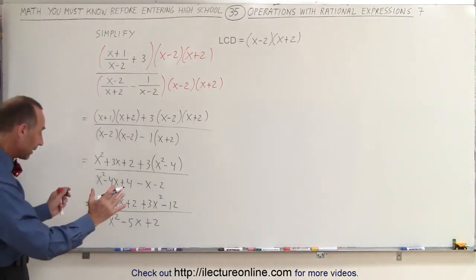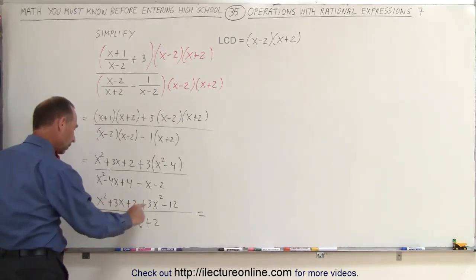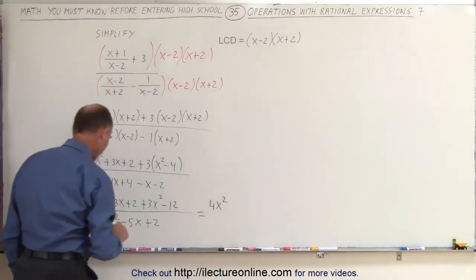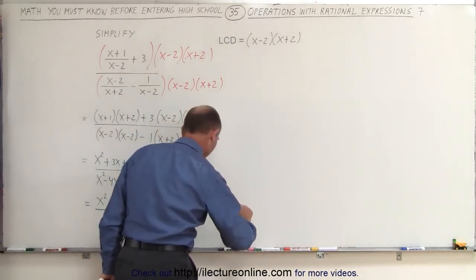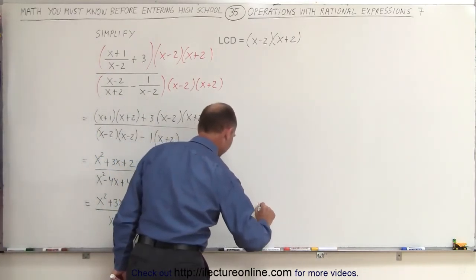Now let's also combine like terms in the numerator and see what we get. So first of all, we have an x squared and a 3x squared, which gives us 4x squared. We have a 3x, that's the only term with an x in it, so plus 3x, and then finally plus 2 minus 12 gives you a minus 10.